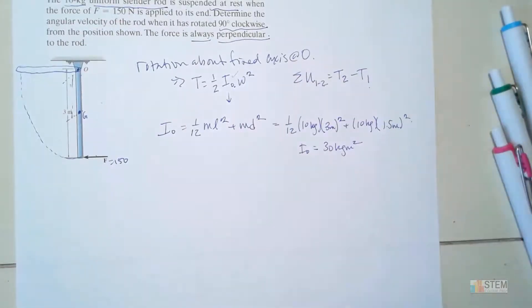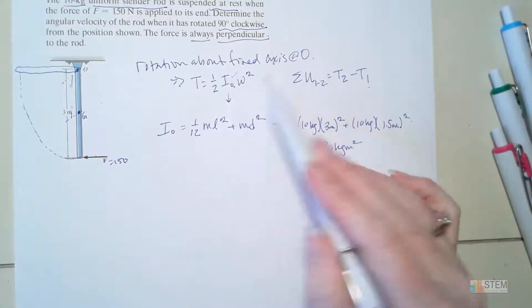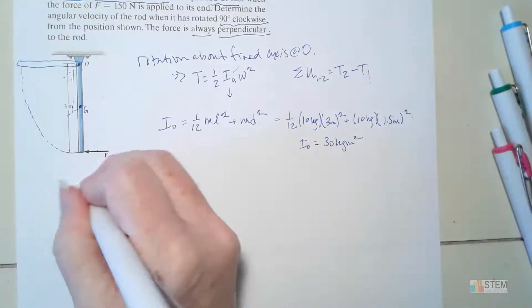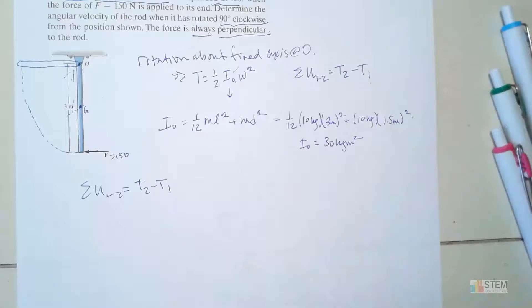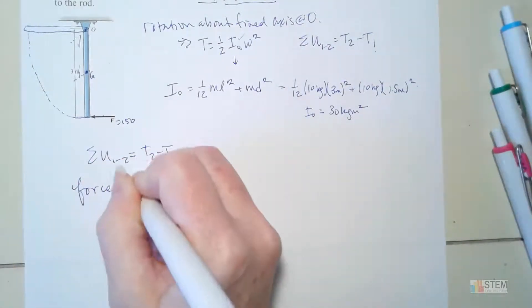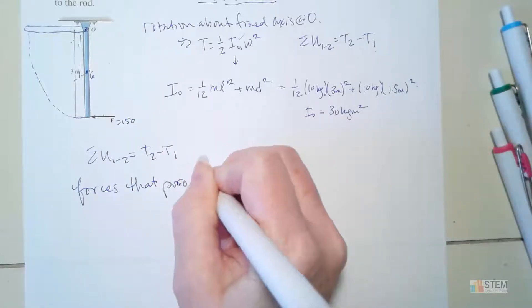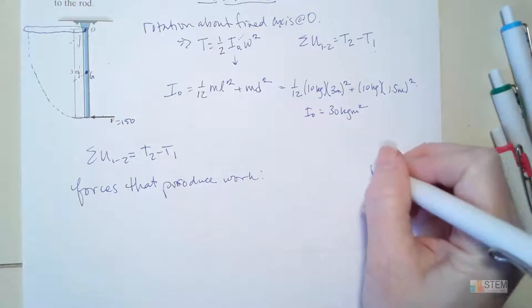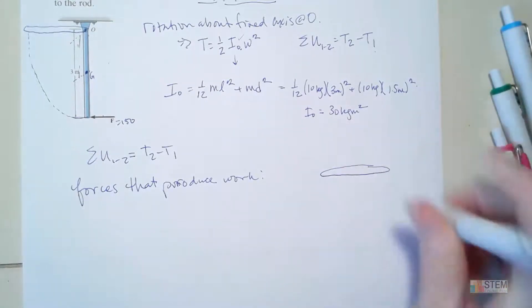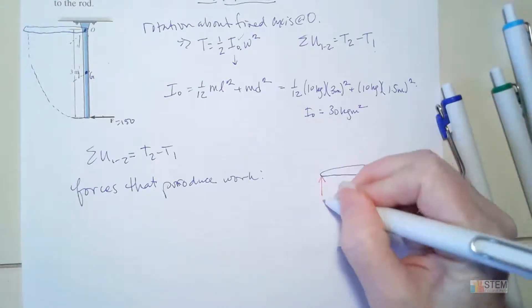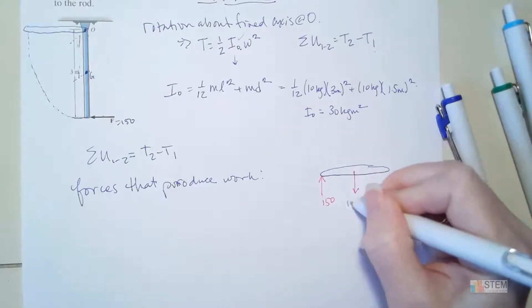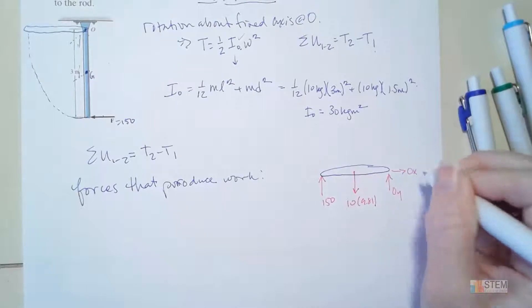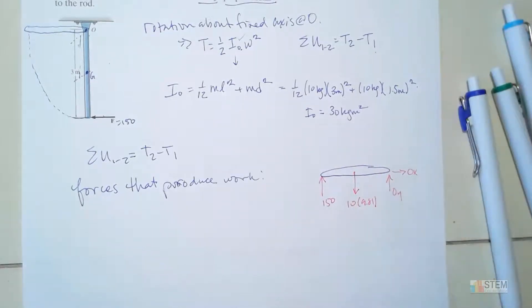So now we've got this part done, and that basically gives us our T equation that we can use. So let's go to this equation next. And for that equation, we need to figure out which forces produce work. So let's look at that. Let's draw a free-body diagram. So let's draw it up here when we're at the 90 degree angle. I've got my force F, which is 150 N. I've got my weight, which is going to be 10 times 9.81. And then we've got a pin at O, so we've got an O_Y and an O_X.